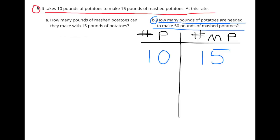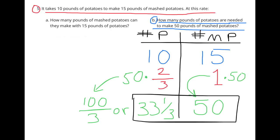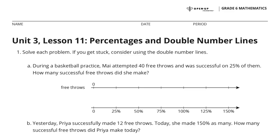Part B: How many pounds of potatoes are needed to make 50 pounds of mashed potatoes? Starting with 10 pounds of potatoes and 15 pounds of mashed potatoes, I divide both by 15: 1 pound of mashed potatoes requires two-thirds of a pound of potatoes. Multiplying by 50 gives 50 pounds of mashed potatoes requiring 33 and one-third pounds of potatoes. Congratulations! You have completed Unit 3 Lesson 11, Percentages and Double Number Lines.